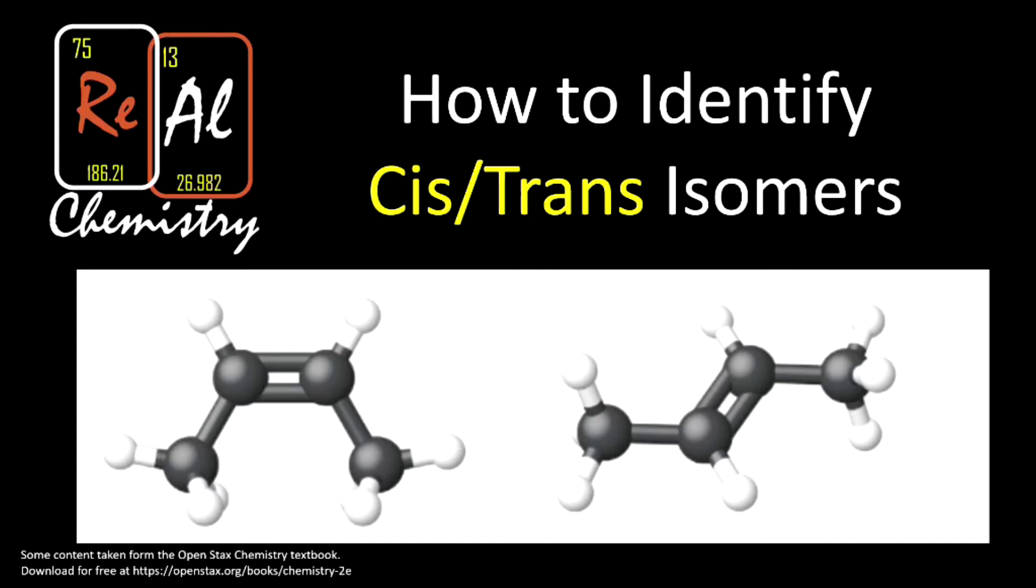First up, we're going to talk about what isomers are in general. Then we'll talk about when you have cis and trans isomers. Turns out it's when there's a double bond. And then lastly, we'll do a bunch of practice problems so that you can identify things as either cis or trans.